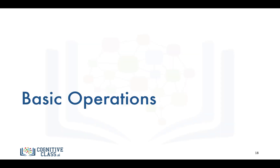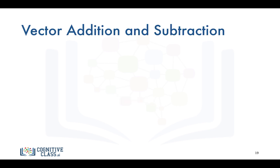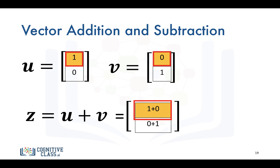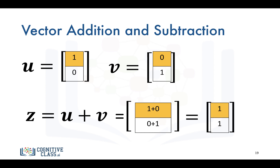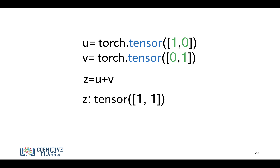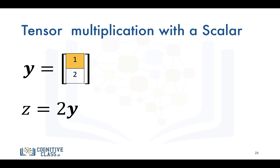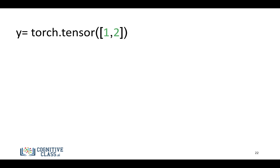Let's go over some basic operations with PyTorch tensors. Tensors behave a lot like vectors, so we can perform vector addition and subtraction. We have tensor U and tensor V — when we add them, the first element of Z corresponds to the addition of the first elements of U and V, and the same applies to the second element. We can also multiply tensors with a scalar, which is identical to multiplying a vector by a scalar. For example, tensor Z is Y multiplied by 2, so every element in Y is multiplied by 2.